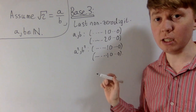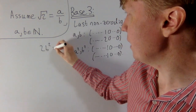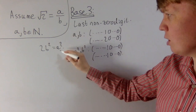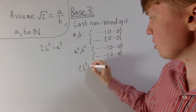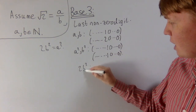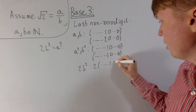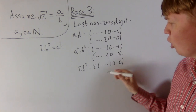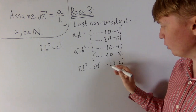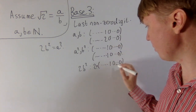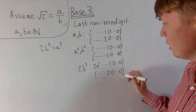So how can we use this to find a contradiction? Remember that root 2 equals a over b, which rearranges to give 2b² = a². We know the last non-zero digit of a² has to be 1. Now let's think about the last non-zero digit of 2b². We take b², whose last non-zero digit is 1, and multiply by 2 — that 1 gets turned into a 2, and the trailing zeros remain.